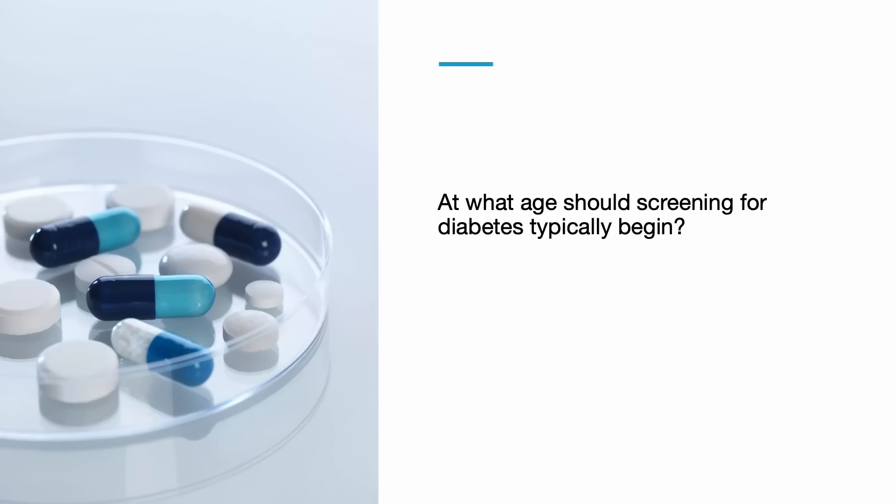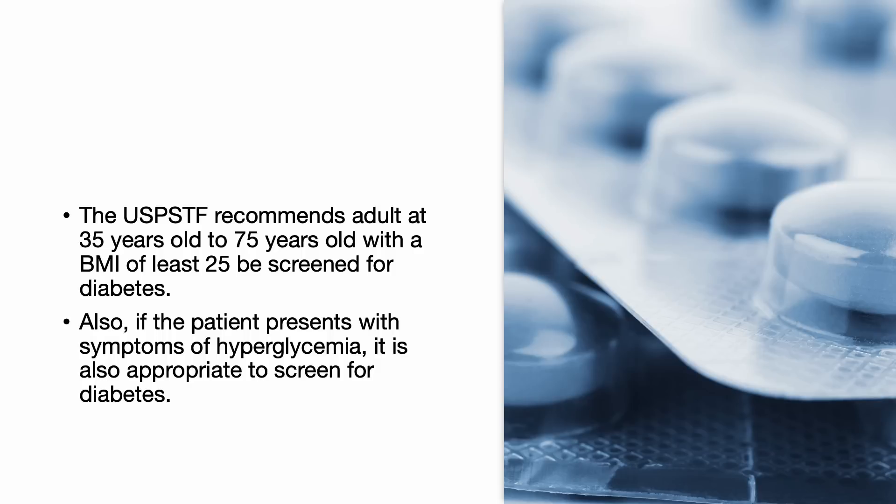At what age should screening for diabetes typically begin? The USPSTF recommends adults aged 35 to 75 years old with a BMI of at least 25 be screened for diabetes. Also, if the patient presents with symptoms of hyperglycemia, it is also appropriate to screen for diabetes.